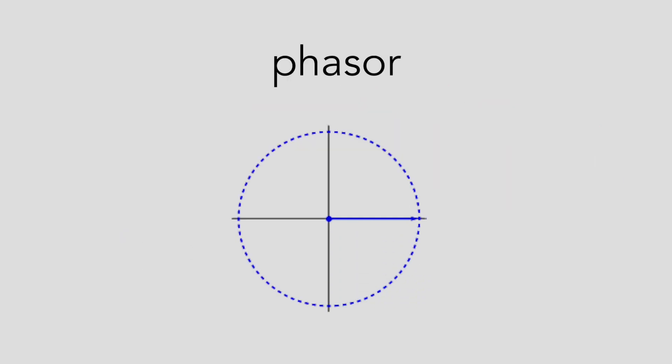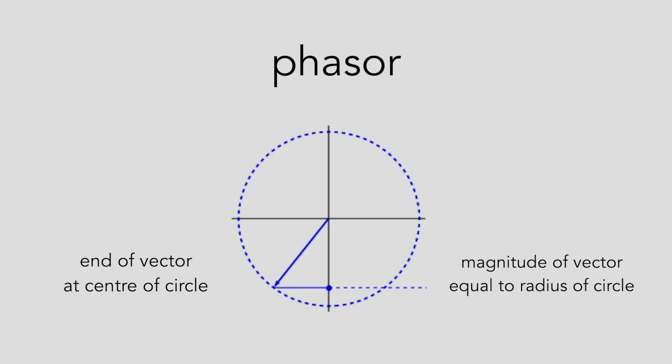A phaser consists of a vector that lives inside a circle. The tail end of the vector is fixed to the center point of the circle, and it rotates around that point. Also, the radius of the circle is the same as the length or magnitude of the vector.